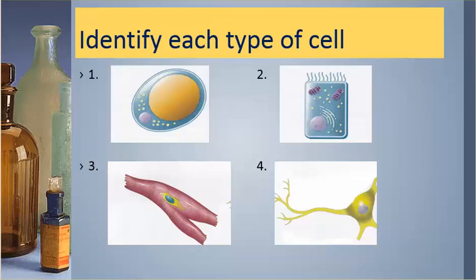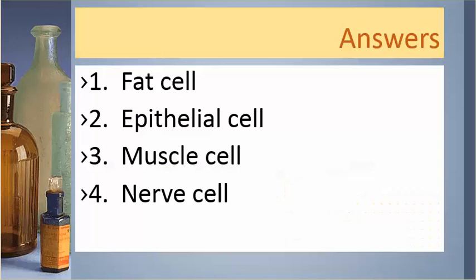Identify each type of cell. Number one is fat cell, number two is epithelial cell, number three is muscle cell, number four is nerve cell.